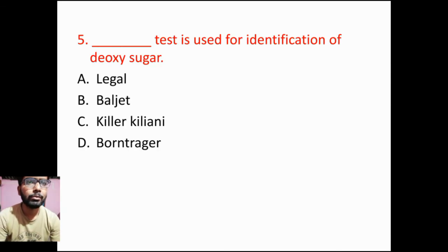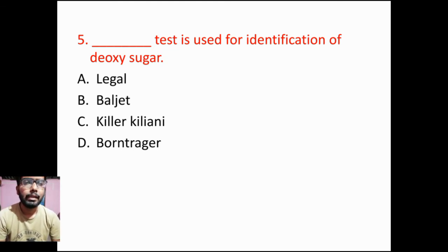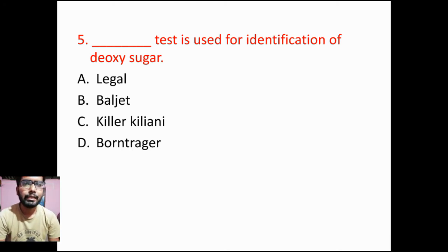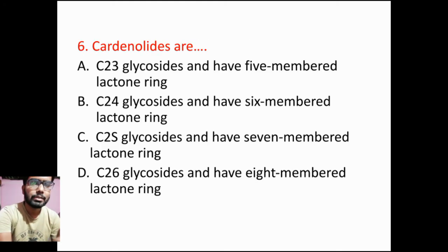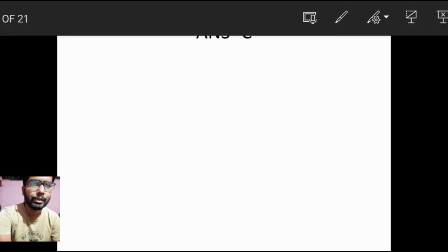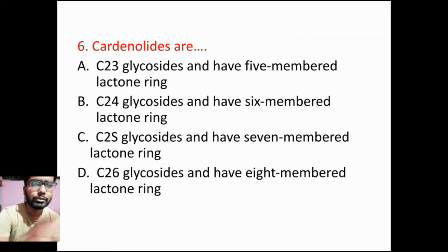Coming to the next question: which test is used for identification of deoxysugar? Options are: Option A: legal test, Option B: bulget test, Option C: Keller-Kiliani, Option D: Bornträger. Keller-Kiliani test is used for identification of the deoxyribose sugar.